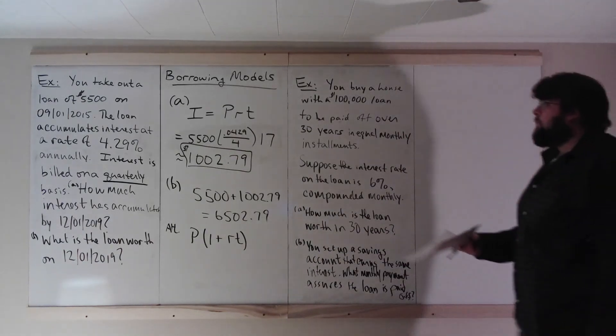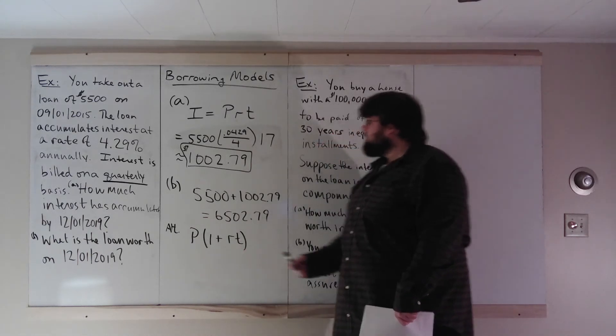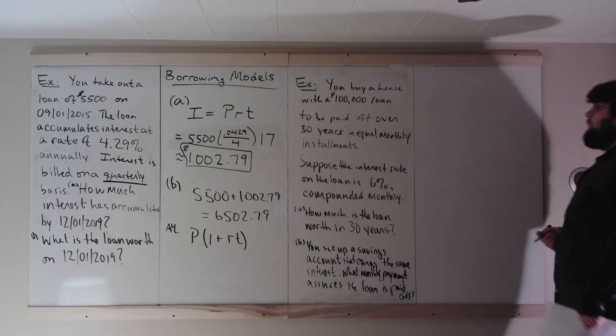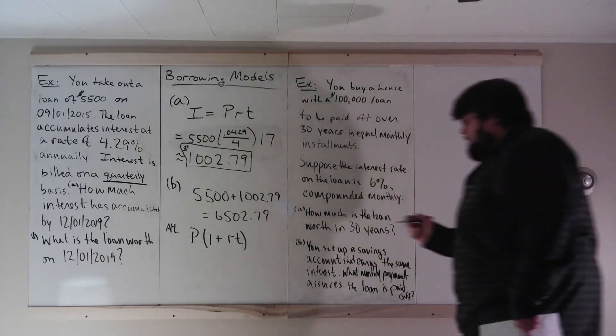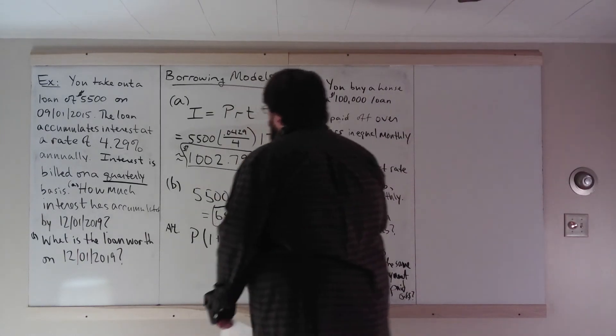P times 1 plus RT. It's 5,500, 1 plus the quarterly rate and the time in quarters. With that, you could use annual rates as well and turn into years and all that. We have it up here in quarters. So R is 0.0429 over 4, T is 17. And then you get this number. Or if you did the interest computation separately as we did, you can just add them together.